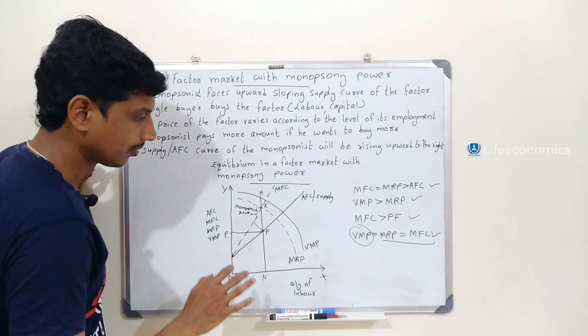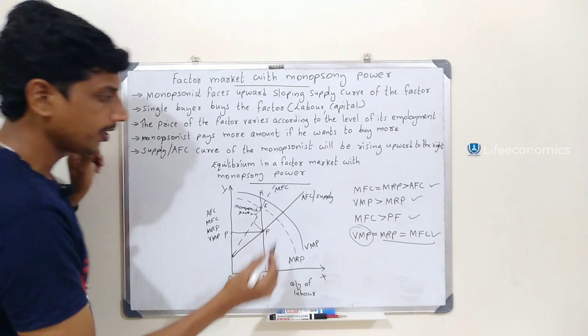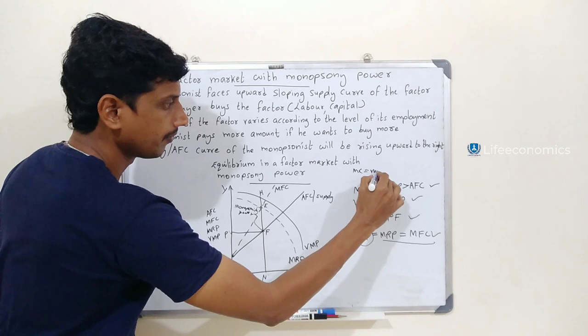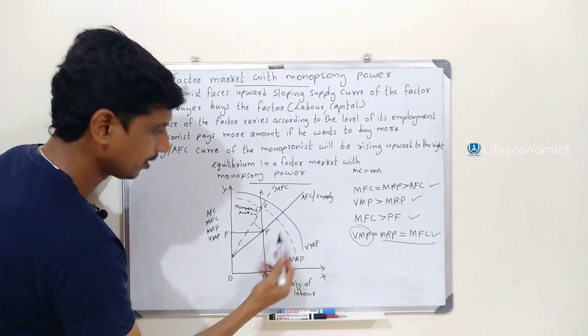Similar to monopoly where Marginal Cost equals Marginal Revenue, in monopsony we look at MFC equal to MRP, so MC equals MR, and that gives us the equilibrium point E.